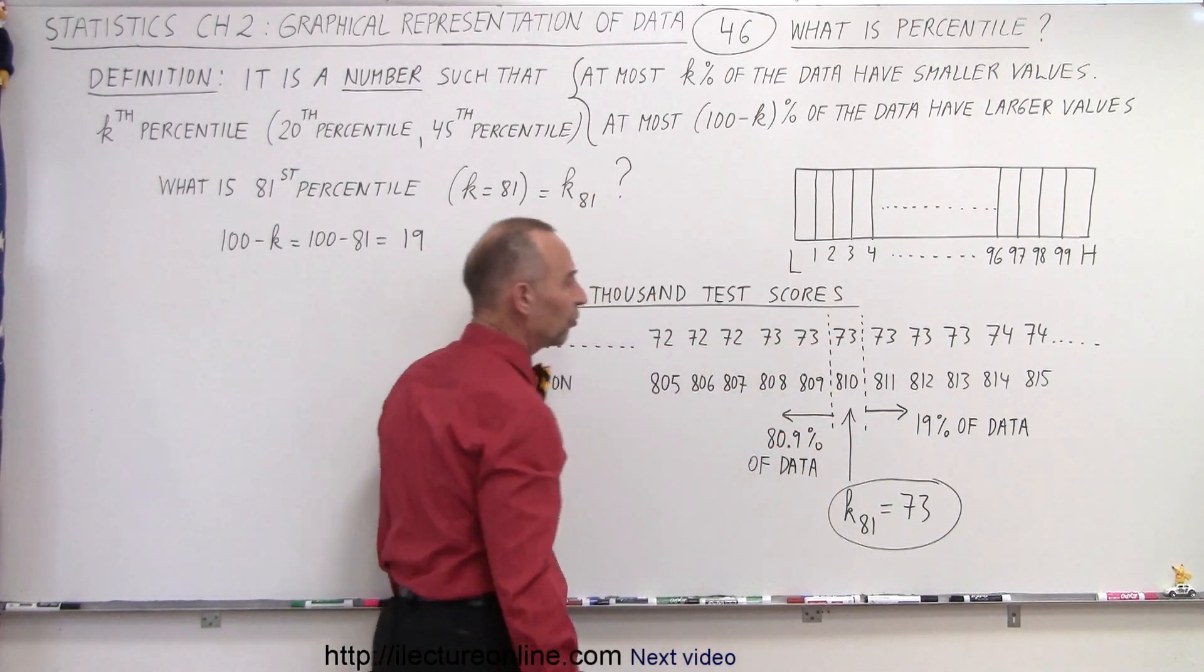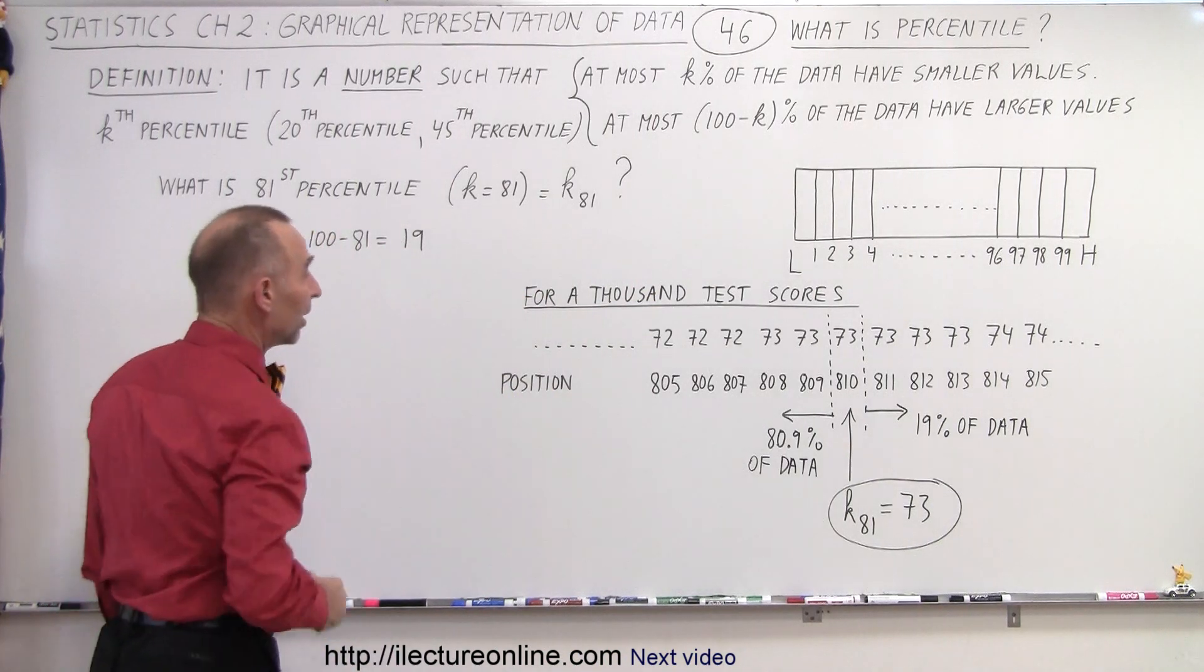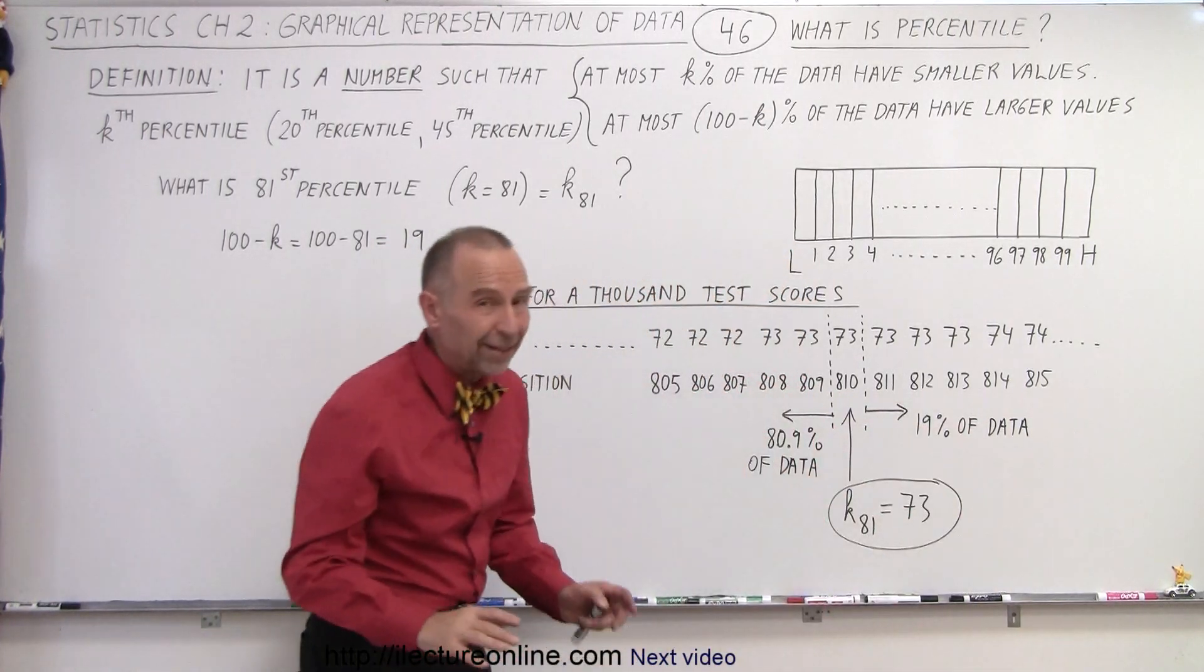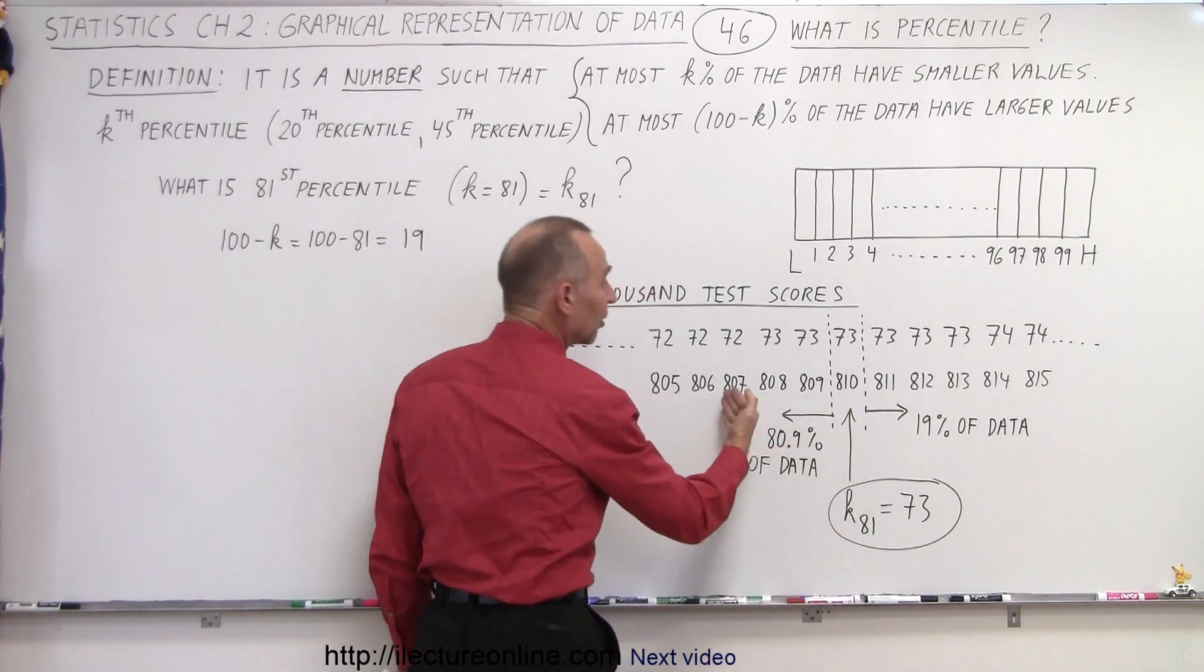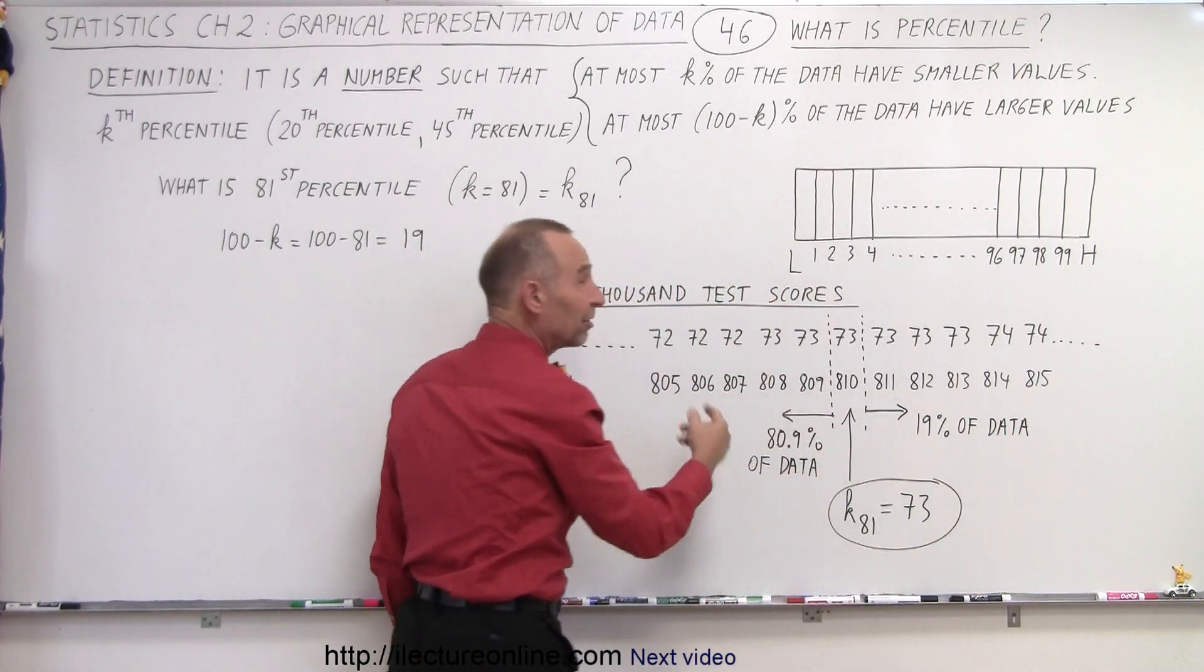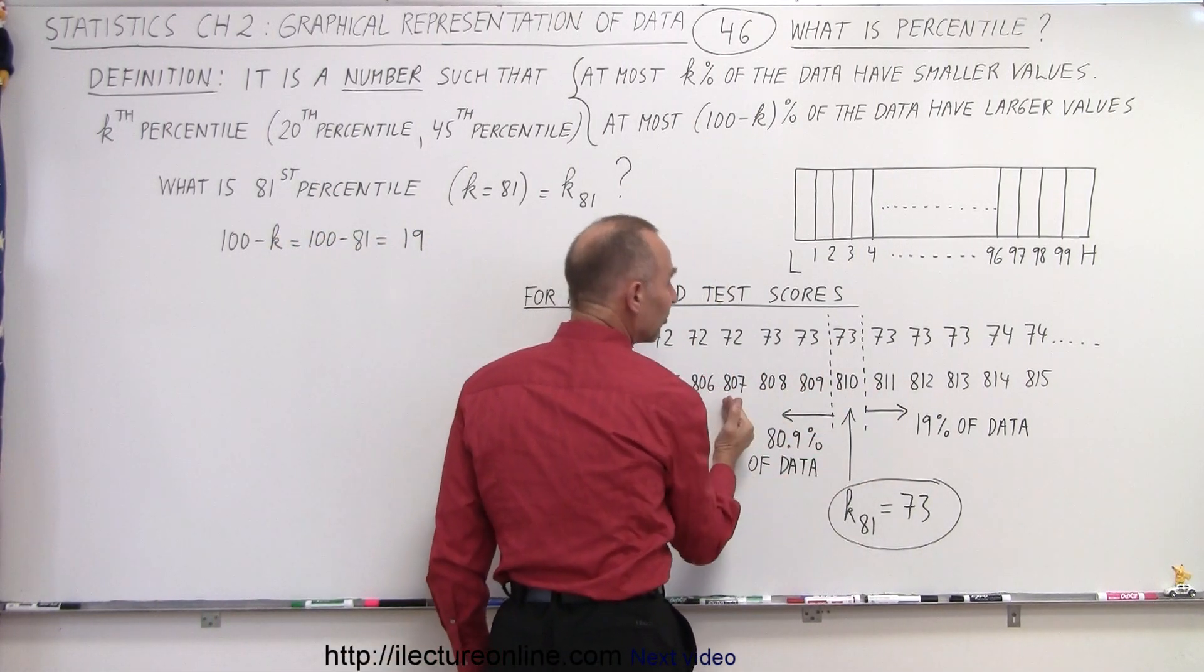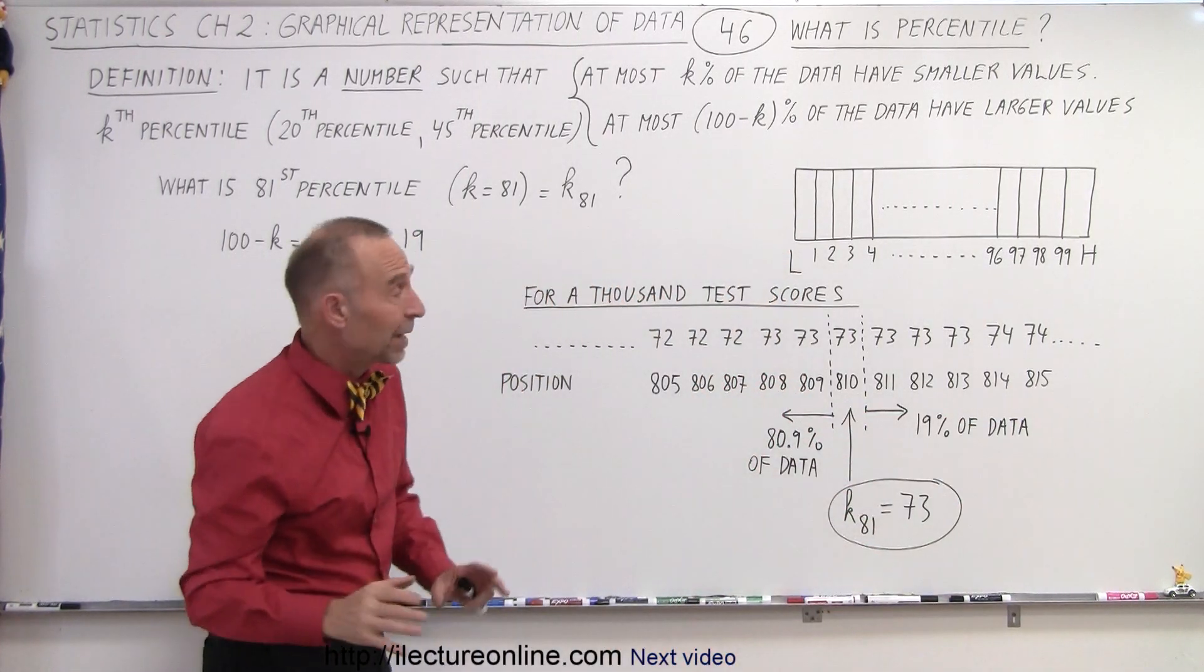Since we're looking for the 81st percentile, we want essentially 81% of the data to the left and 19% of the data to the right, but that is not entirely possible. What we could do has 80.9% of the data to the left and 19% of the data to the right, because our one data point takes up 0.1% of all the data values. Of course, we could have moved over one and said that we had 81% over here and 18.9% over there. Either way, it doesn't make a lot of difference.